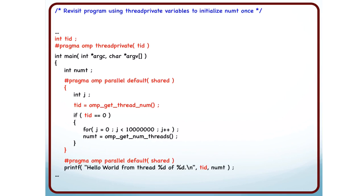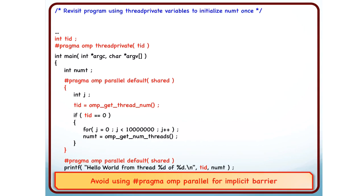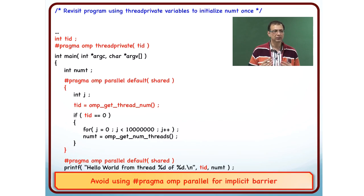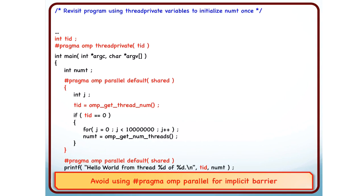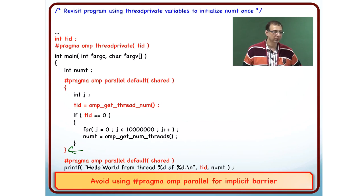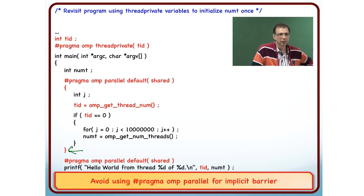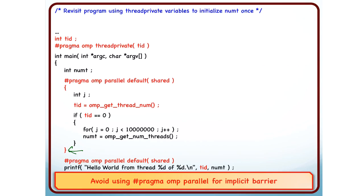Going back to the same program where tid is declared to be thread private, we are doing something which does not make a lot of sense: using a '#pragma omp parallel' region as a point of synchronization between all threads — to ensure that no thread proceeds beyond this point. This is called a barrier operation. A barrier is a point where all threads must come together before any of them proceeds further.